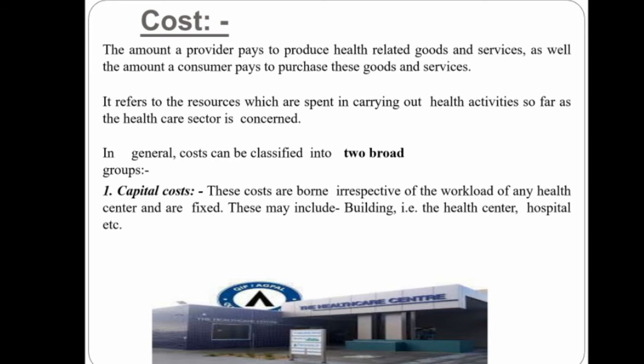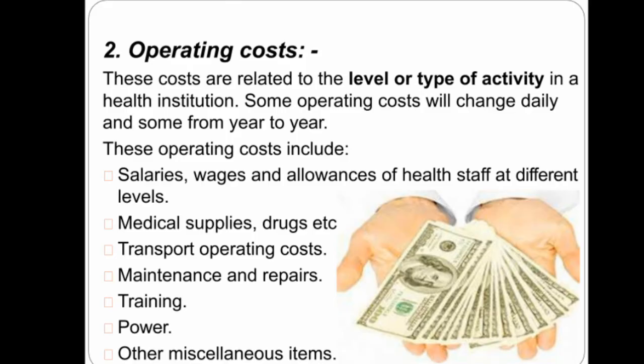There are two broad groups of cost: capital cost and operating cost. Capital cost is related to the health center and depends on the workload — it is fixed, and includes buildings, health centers, and hospitals. Operating cost is for a health institution and depends on the type and level of activity, and changes daily.